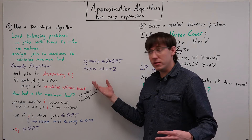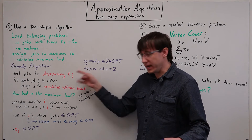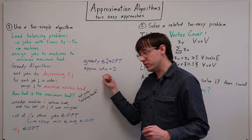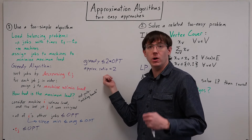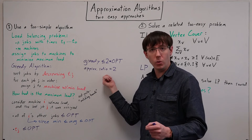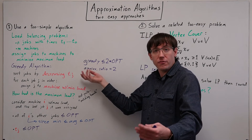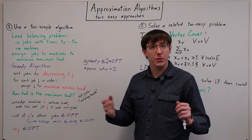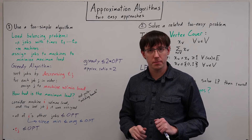And so we say that this greedy algorithm has an approximation ratio of two, since it gets us within a factor of two of the optimal solution.